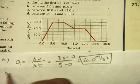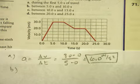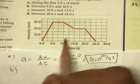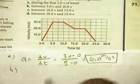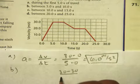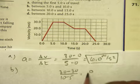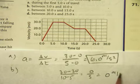For part B, between 5 and 10 seconds. The VF would be 30, the VI would be 30, and the time would be 10 minus 5. So that's 0 over 5, or 0 meters per second squared.